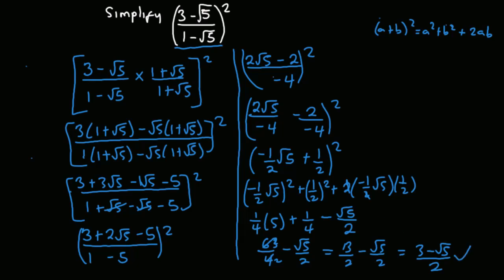Therefore, the simplified form of (3 minus root 5) all divided by (1 minus root 5), all squared, is (3 minus root 5) all over 2. Thank you for watching this video. Let me know any other approach you have to this. And please, if you haven't subscribed, please do subscribe to this channel. Bye-bye.